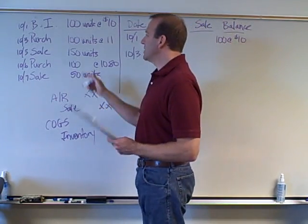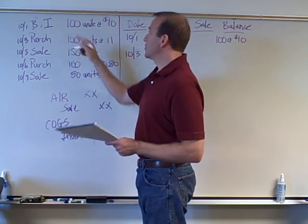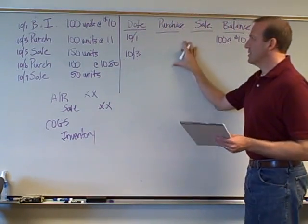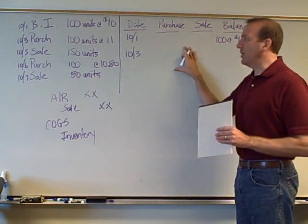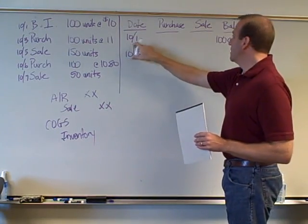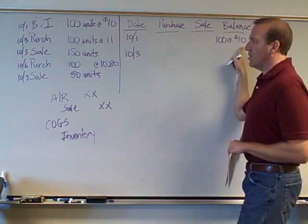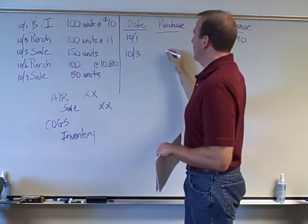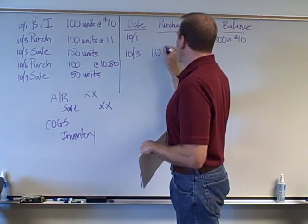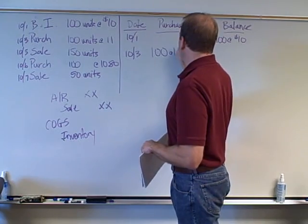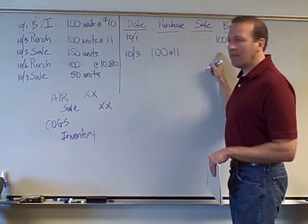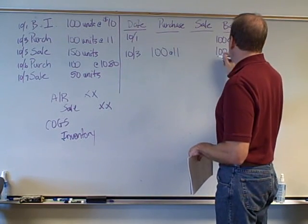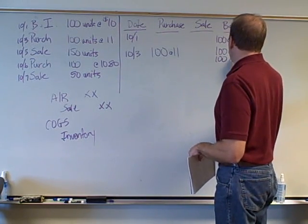Under FIFO, we would say the first items in are the first ones out. I've put together a little spreadsheet to fill out. On the first, here is the 100 units at $10. Then on the third, we're purchasing — I have a column here for purchases — we're purchasing 100 more units at $11. So our balance then is we still have our 100 at $10 and 100 at $11.